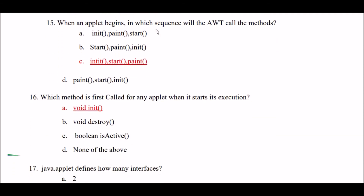When an applet begins, in which sequence does AWT call the methods? Option A: init, then paint, then start. Option B: start, then paint, then init. Option C: init, then start, then paint. Option D: paint, start, and init respectively. The right answer is Option C — when an applet begins, AWT calls init method, then start method, then paint method.